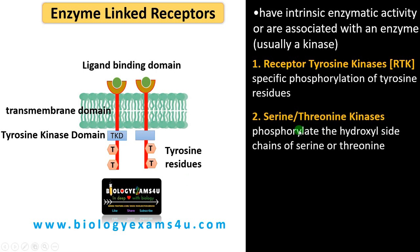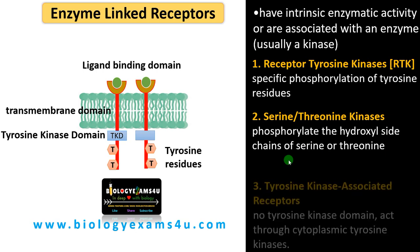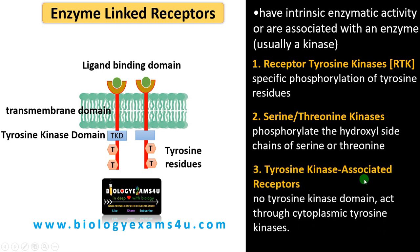The second type of enzyme linked receptor is serine/threonine kinases. Here the difference is that phosphorylation occurs on the hydroxyl side chains of serine and threonine amino acids — both having hydroxyl groups just like tyrosine. The third subtype is tyrosine kinase associated receptors, where there is no tyrosine kinase domain; instead, certain enzymes act through cytoplasmic tyrosine kinases present in the cytoplasm.